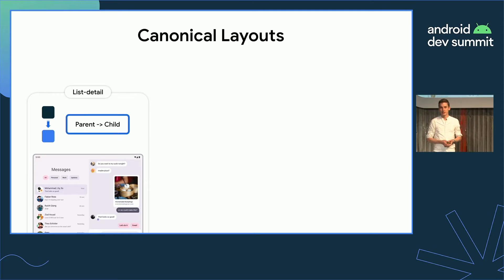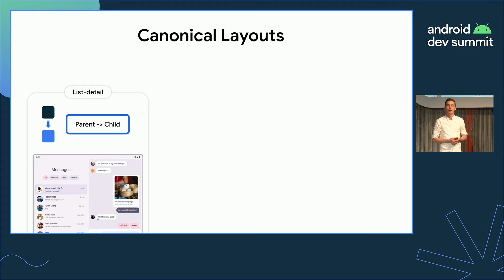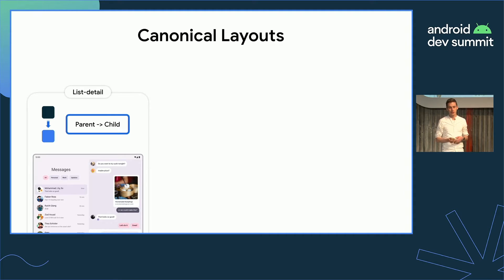As you heard in the last talk, the canonical layouts are based on what we know about a large sample of apps. We've developed three canonical layouts that seek to address a lot of the broad questions about how apps can and should adapt as you move between different screen types and sizes, so that you can focus on the questions that are more specific to your product. We're going to dive into each of these layouts one by one.